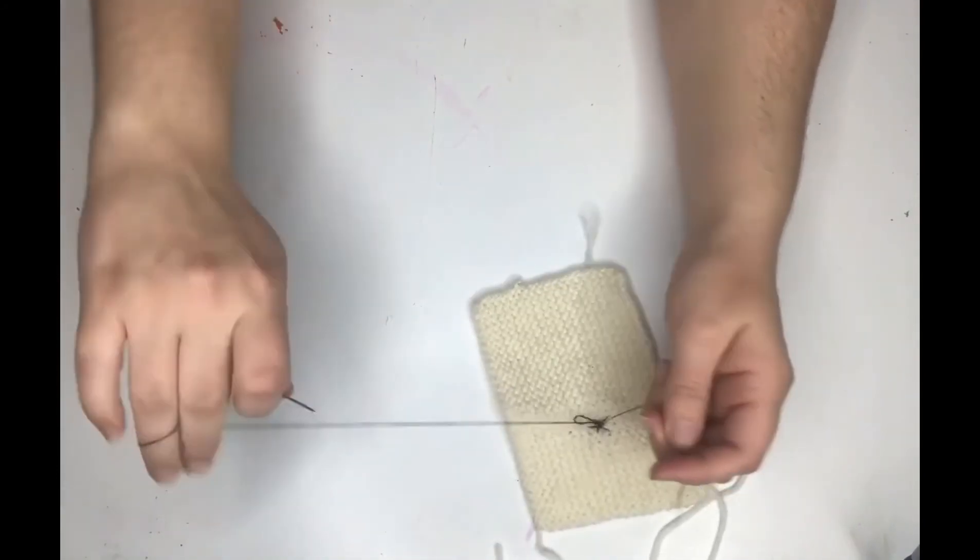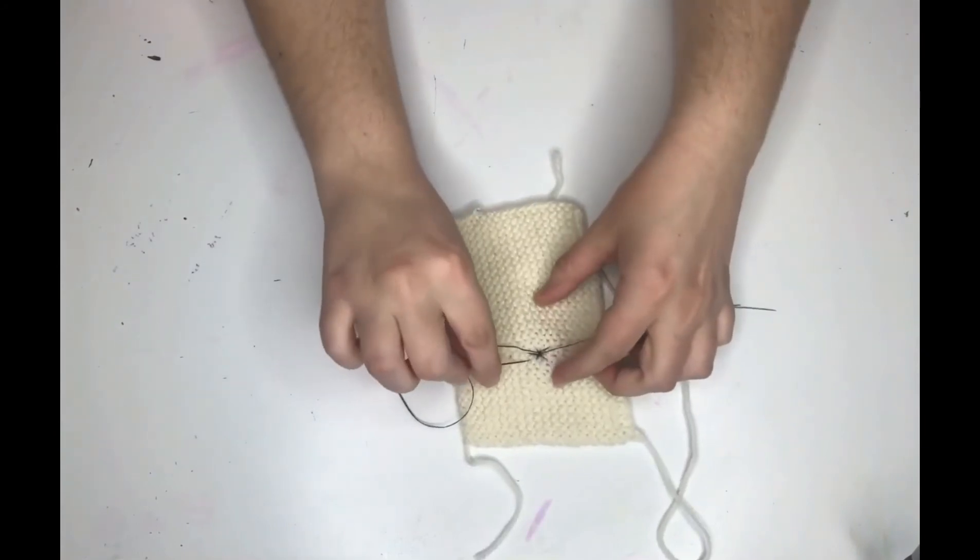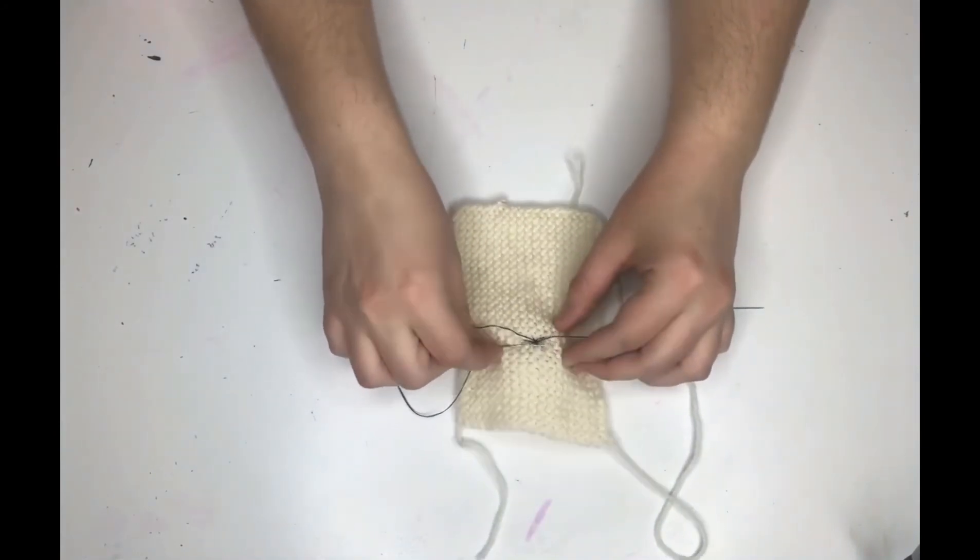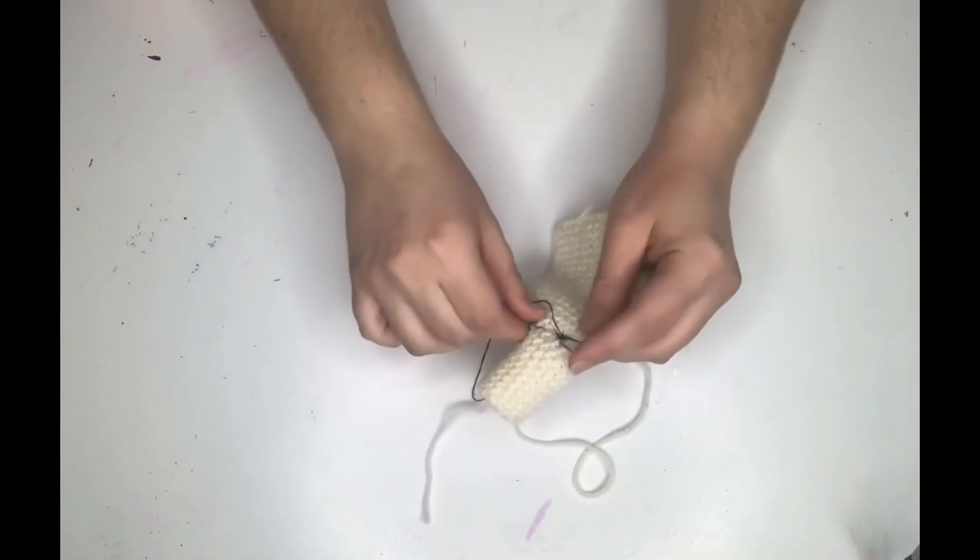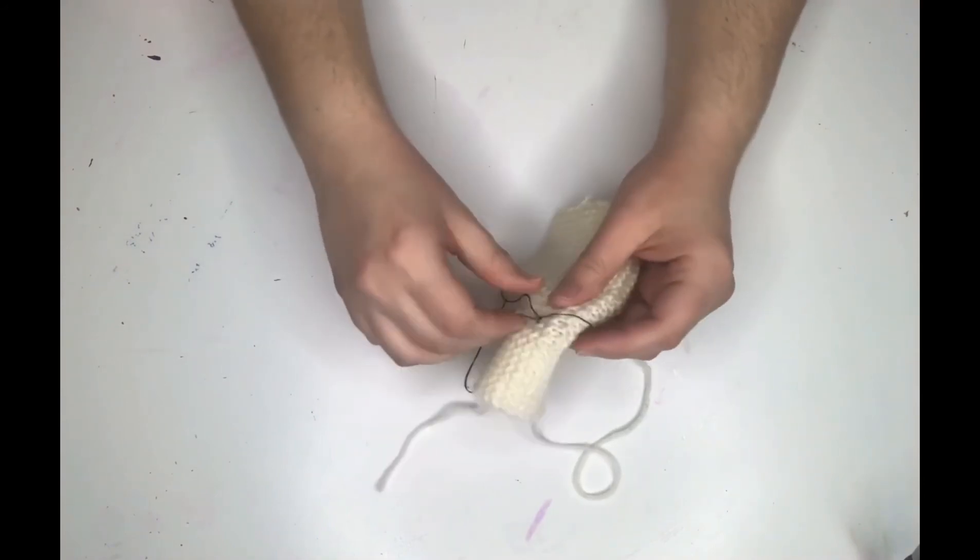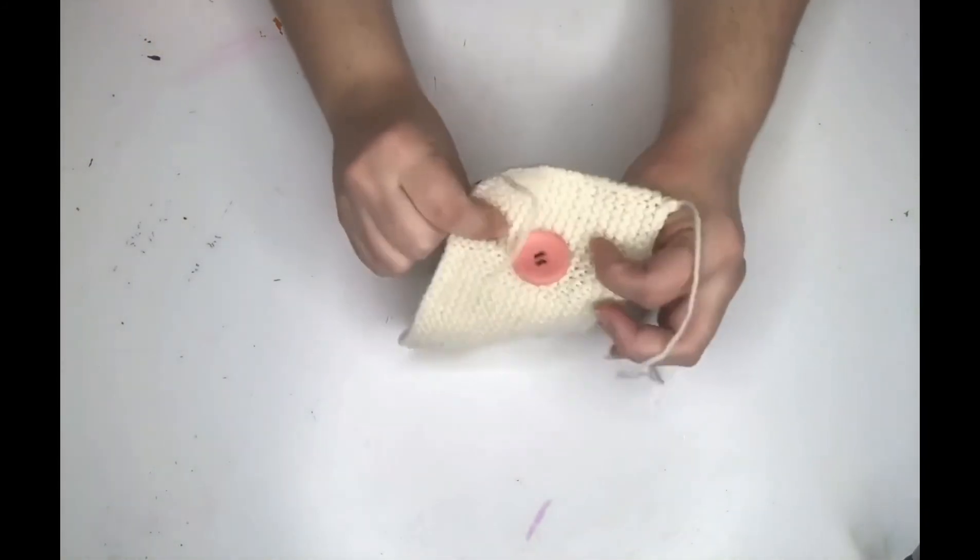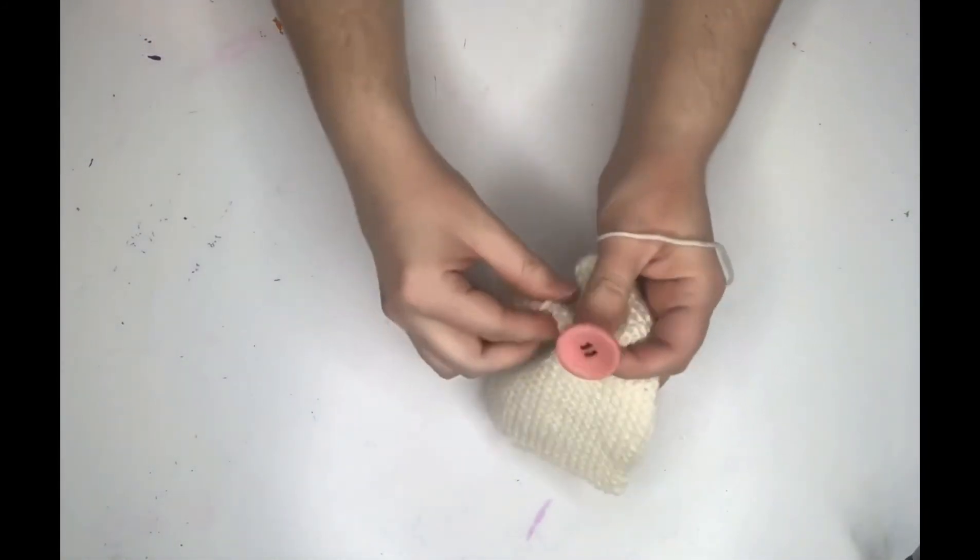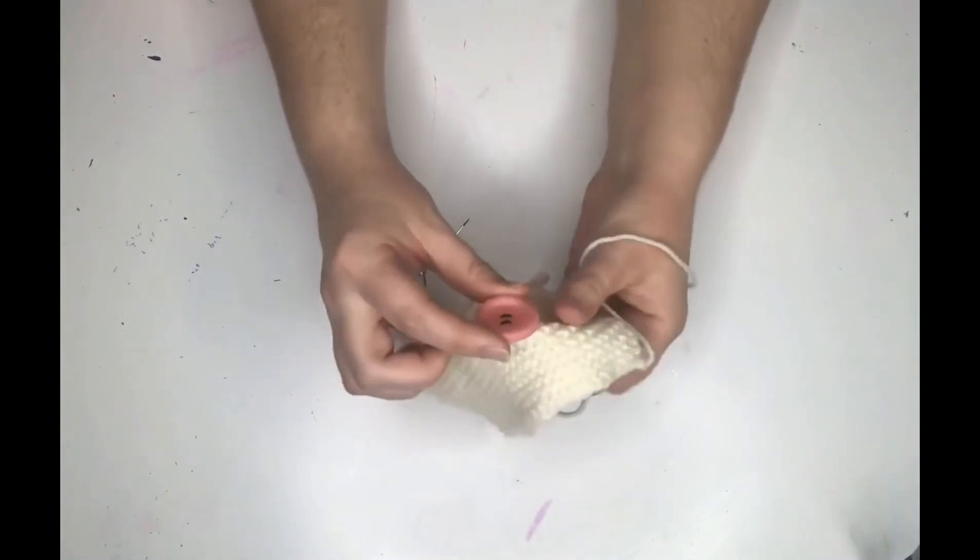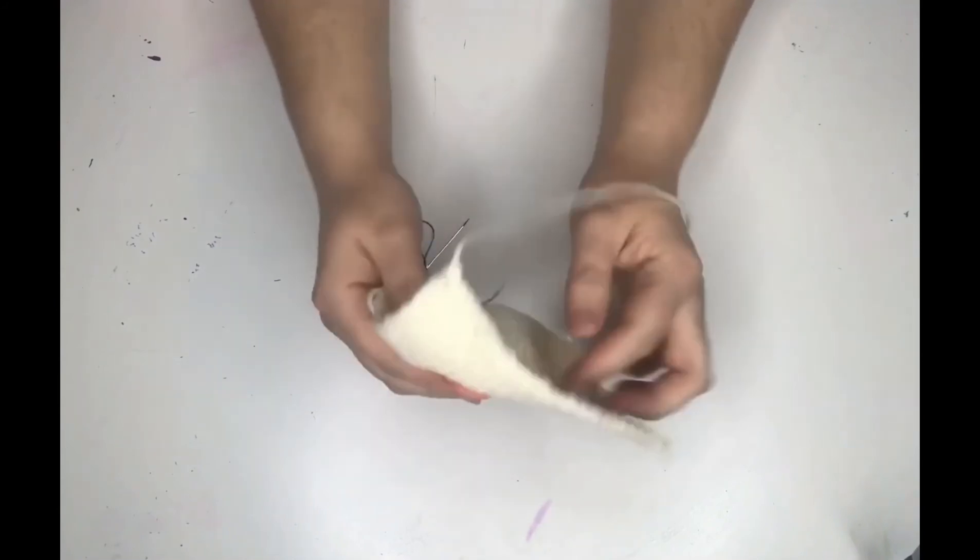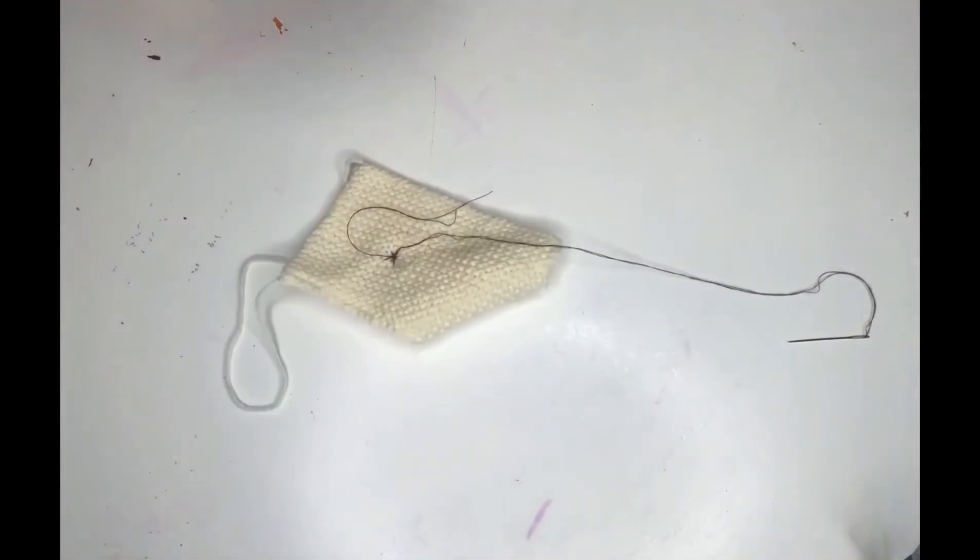If you want to, you can also undersew the button as well to reinforce it. I don't think I need that this time. And voila! Your button should be secure but still loose enough to function. Once you've done that, snip off the ends and that's it, all done.